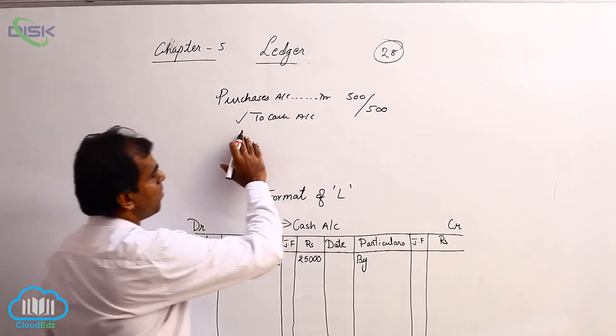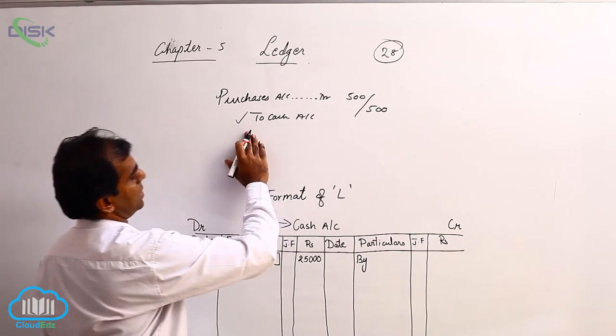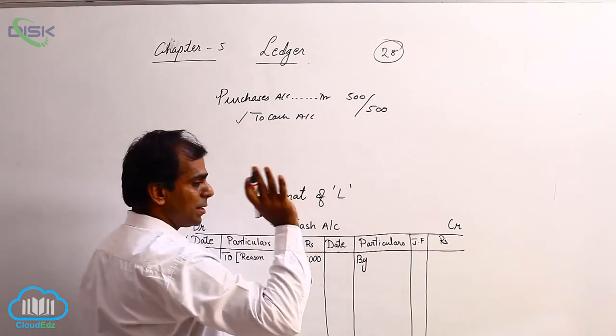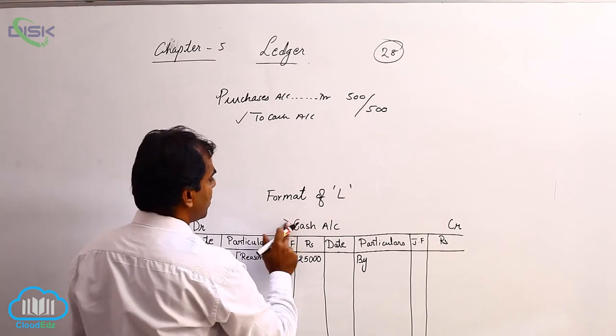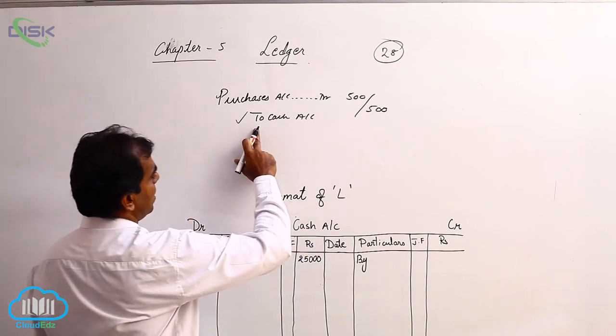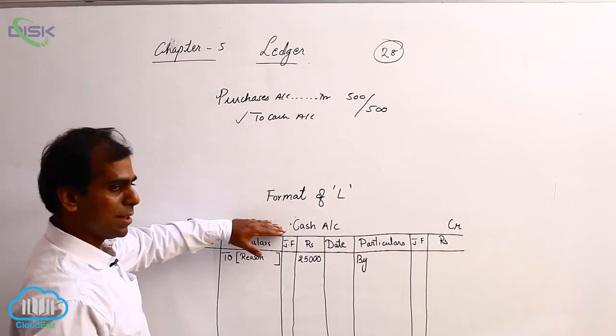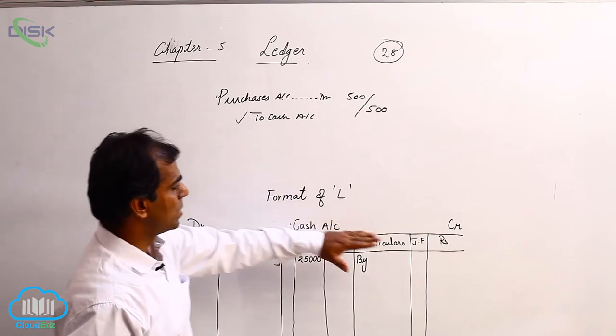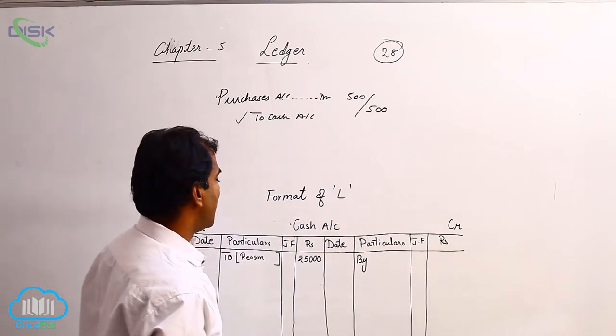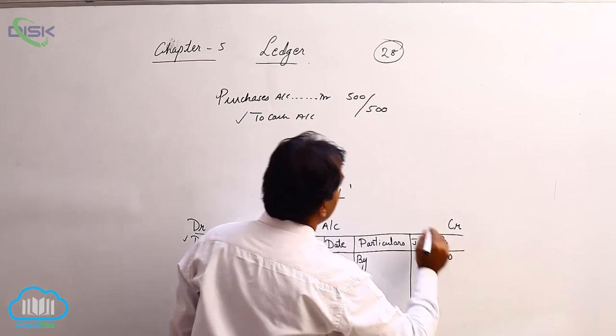Cash is in the credit part of your journal entry. Now, I am to post this to the cash account, because my account opened here is cash. What I am doing is, cash account is credited in the journal entry. So in my ledger, in cash account, I will go to the credit side and write 500,